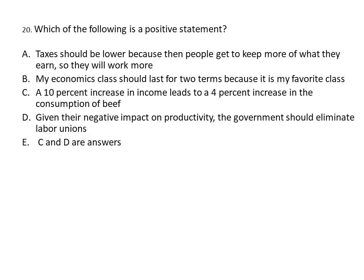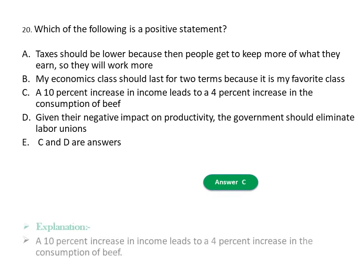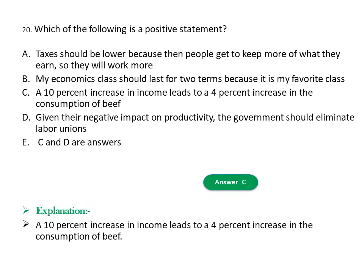Question twenty: Which of the following is a positive statement? A) Taxes should be lower because people will work more. B) My economics class should last two terms because it is my favorite. C) A 10% increase in income leads to a 4% increase in consumption of beef. D) Given negative impact on productivity, the government should eliminate labor unions. The answer is C — it is a testable, objective positive statement.